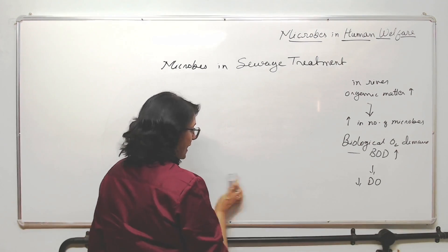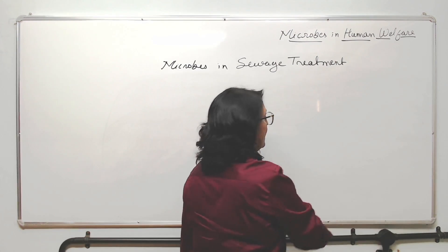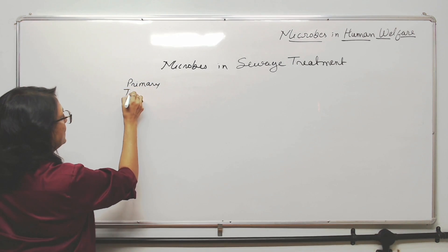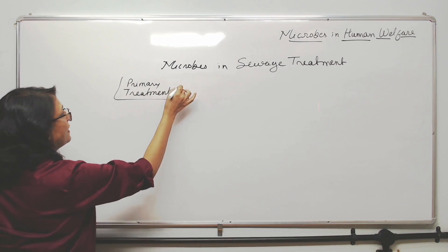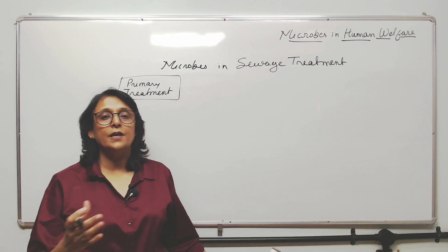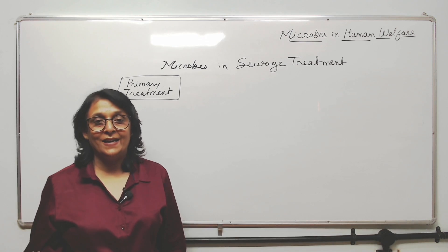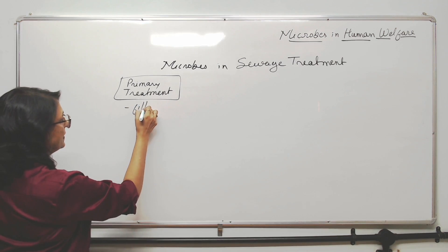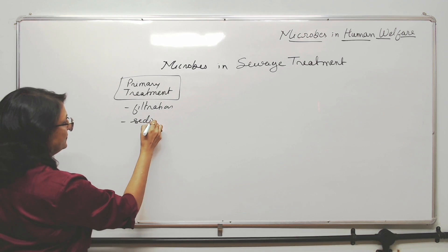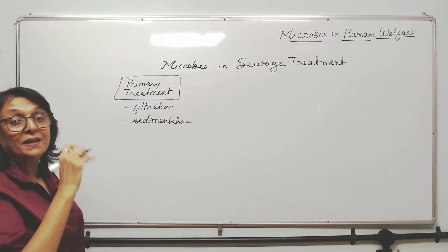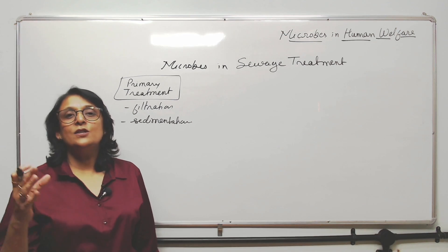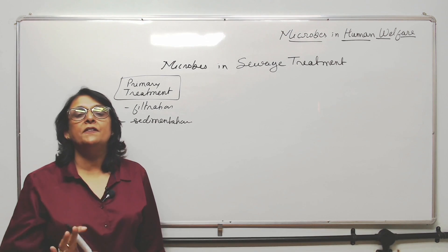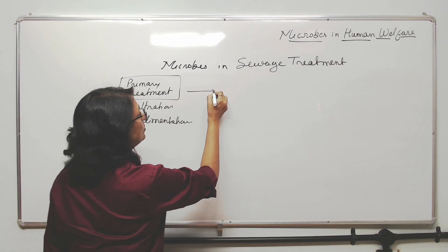Sewage treatment is done in 3 steps, or sometimes stopped after 2 steps. The first is known as primary treatment. All the sewage collected from the town or city is sent into a sewage treatment plant, reaching a huge tank called the primary treatment tank. Two things are done here: filtration and sedimentation. Because of filtration, insoluble cloth, paper, and similar things can be removed. By sedimentation, mud, pebbles, and stone pieces can be removed. Then it is sent to secondary treatment.